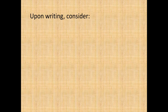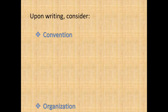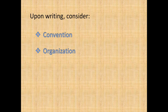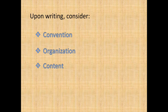Upon writing your argument, there are several things you must take into consideration. First, Convention — this refers to your spelling, grammar, capitalization, and proper punctuation. Second, Organization — which refers to the transition of ideas from paragraph to paragraph or sentence to sentence; it is better to use transitional words or phrases. Third, Content — which refers to the ideas included in your argument. And last, Word Choice.